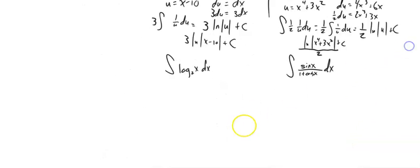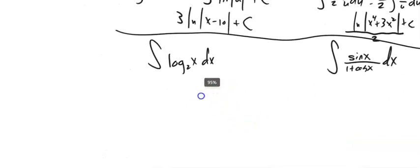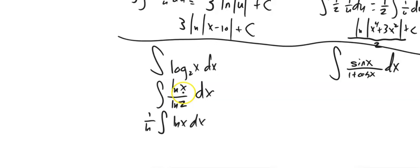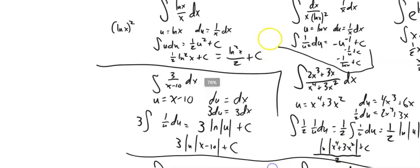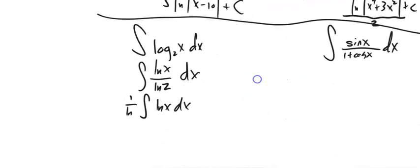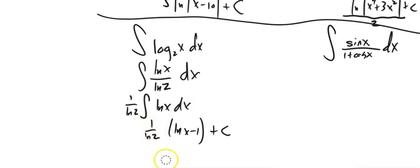Two more examples. The integral of log base a of x: by definition, or using the change of base formula, this pops out as x times (ln x minus 1) divided by ln(a) plus C. You can write it that way, or since the x terms are multiplied together you can tuck the x up to get x(ln x minus 1) over ln(a) plus C.